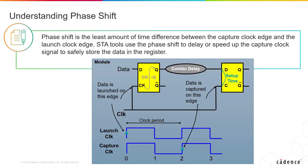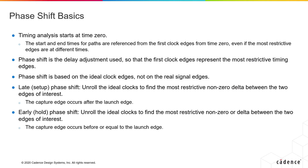In timing reports, some tools report the difference in the most restrictive launch and capture edges as phase shift. This can be helpful in calculating the time required for the data to arrive at the capture flop. Phase shift is a concept that helps create better timing reports when you have separate clocks for launch and capture. But even in the case of using the same clock for both launch and capture, some tools separately report a phase shift of 1 clock period, including that phase shift in the required time calculation for setup. For multiple clocks, we must understand the basics of phase shift.